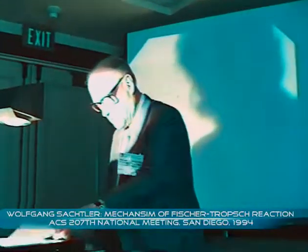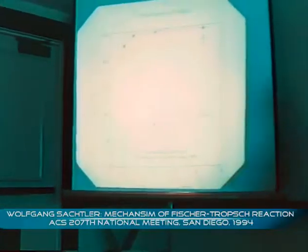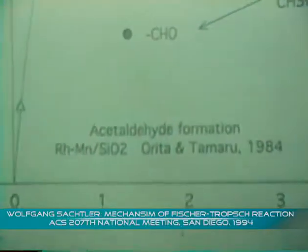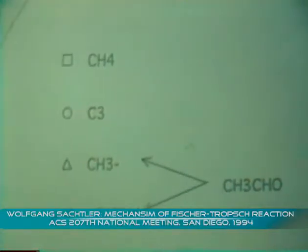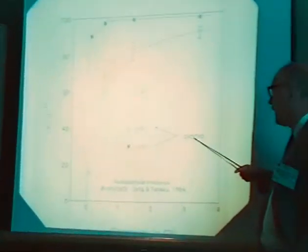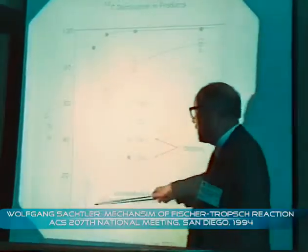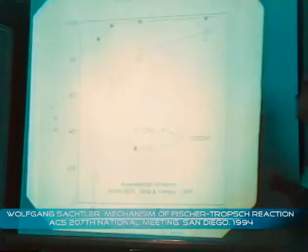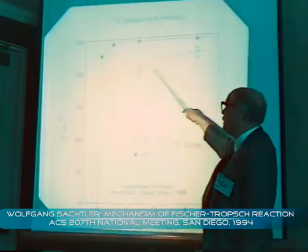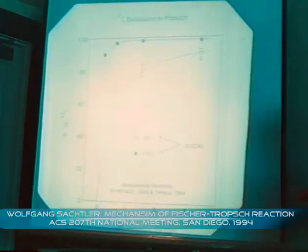The other support for this general chemistry is work which Orita and Tamaru did years ago, again with rhodium-manganese. When they used an isotopic switch, changing from one labeled CO to the other carbon-labeled CO, they found for acetaldehyde that the methyl group and the aldehyde group had a completely different history. The aldehyde group very quickly acquired the composition of the new isotope after the switch, whereas the methyl group slowly acquired that composition, on the same curve as methane and propane.